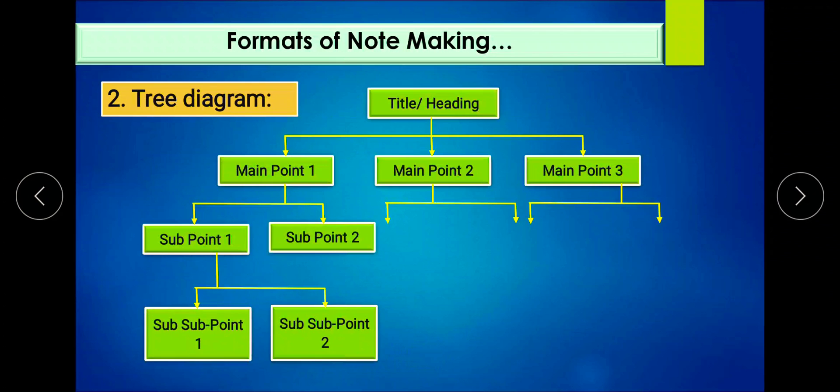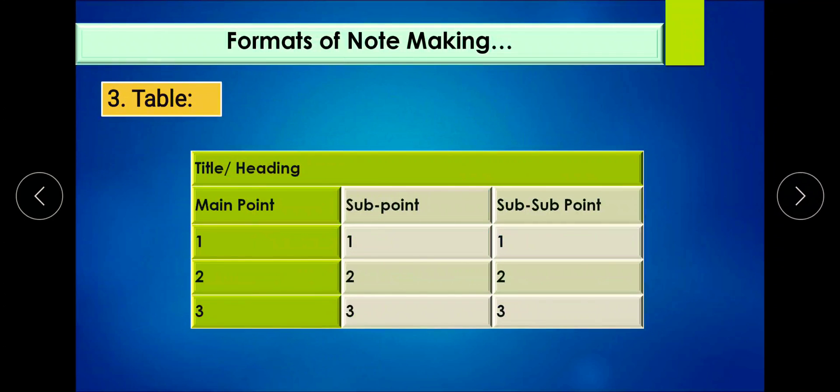We can use such branches for main points - main point one, main point two, main point three - and sub-points in that hierarchical relation. The third one is table. Here we can classify those main points and subordinating details into horizontal or vertical groups, drawing a proper table with main point, sub-point, sub-sub-point, and their examples.